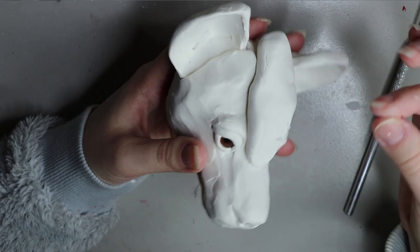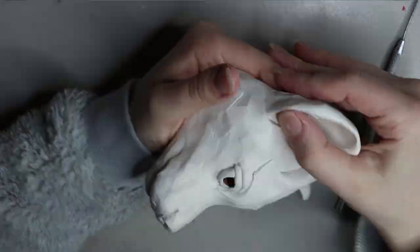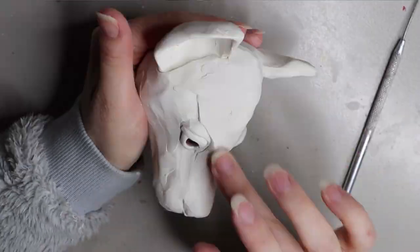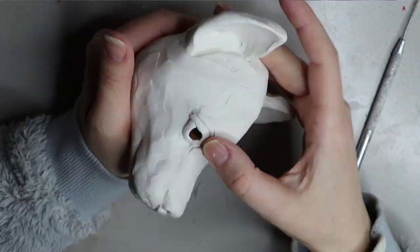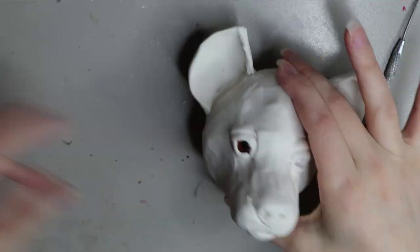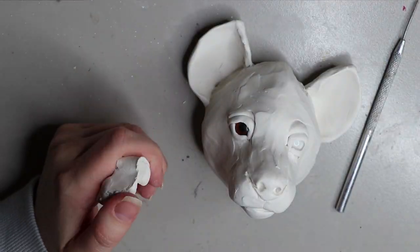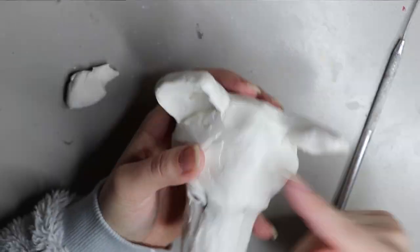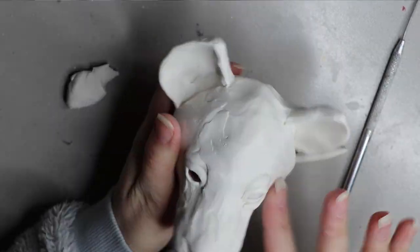They also have like a peak at the top of their head. Wolves and stuff don't have that, they've got a bit that goes in, but hyenas have a little bit of a peak. When you're sculpting hyena, definitely keep that in mind because it changed the way my sculpture looked completely and it made it look way more like a hyena than what I had it as before.